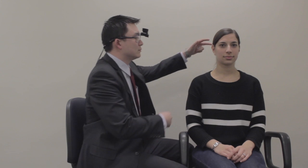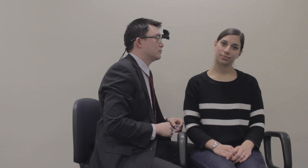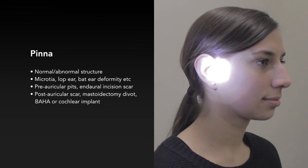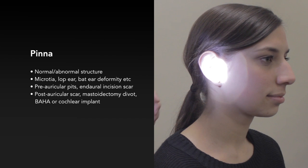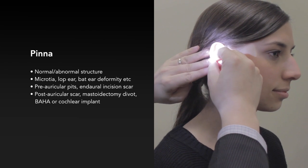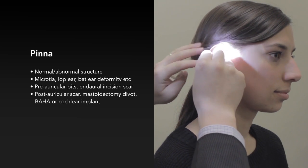The patient sits with the relevant ear facing you. The head begins in a neutral position, but when examining the external auditory canal and tympanic membrane it will be tilted towards the opposite shoulder. Begin with pinna examination. The pinna looks normal. There are no preauricular pits or scars. Folding the ear forward, there are no postauricular scars, and on palpation there are no bar hearing aid abutments, mastoid divot or cochlear implant.